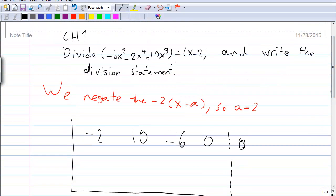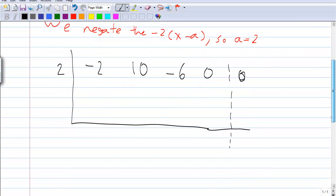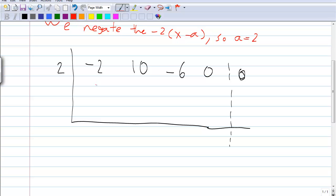And a is 2 here. Bring down -2 first. 2 times -2 is -4. 10 plus -4 is 6.